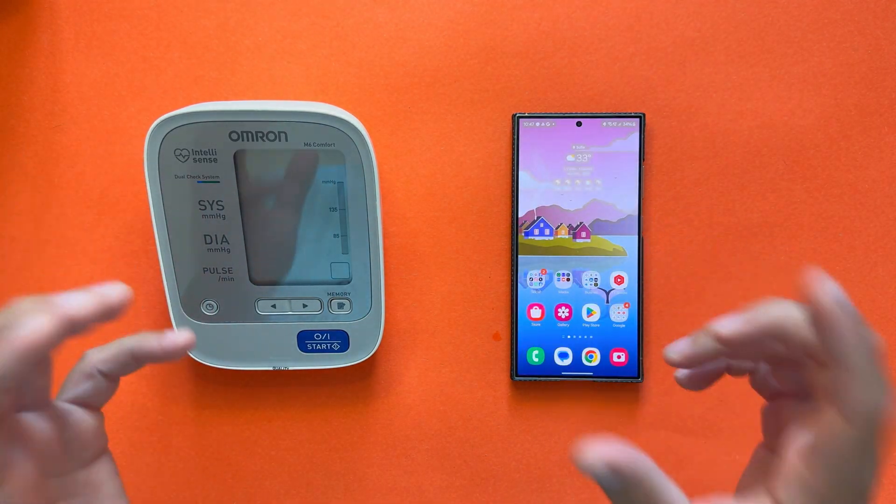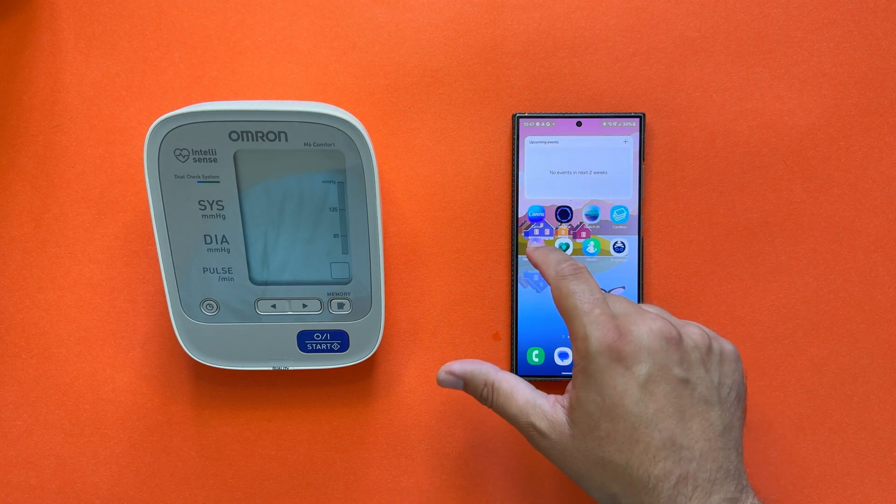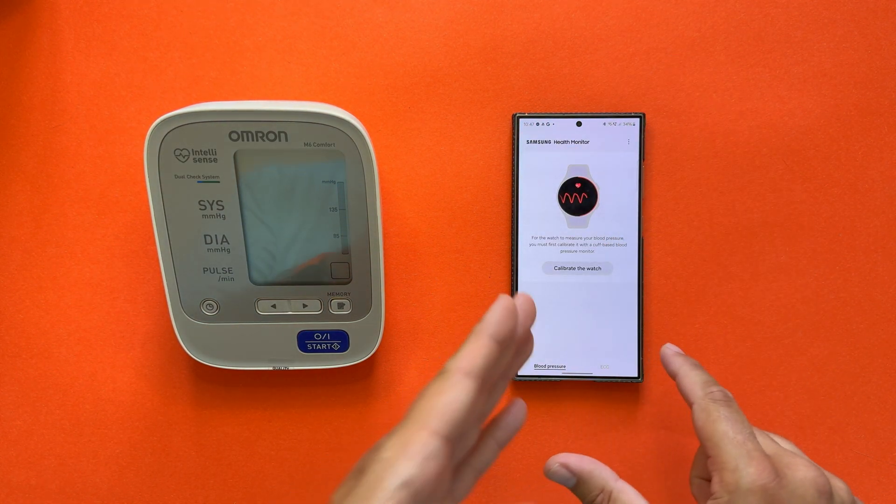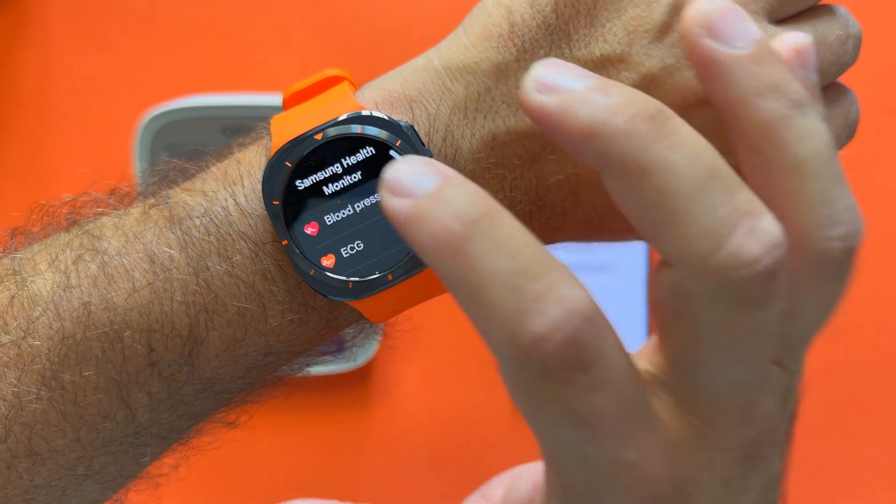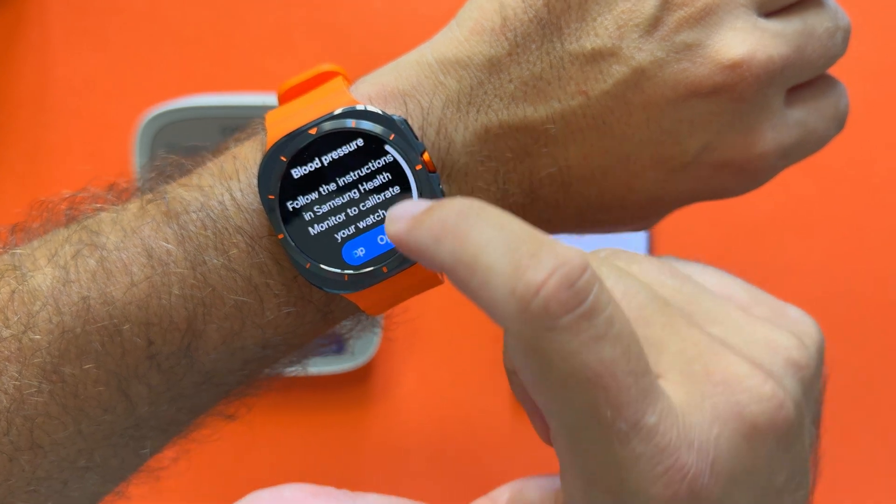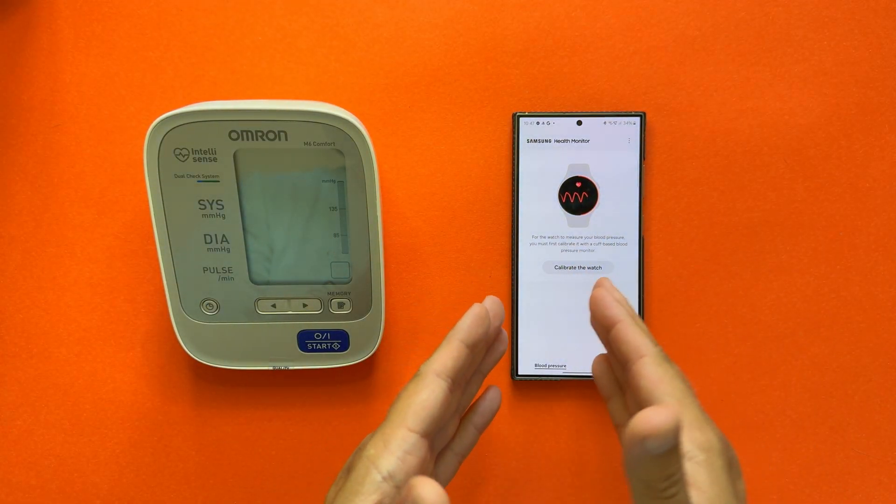But how does that work? First you need to download Samsung Health Monitor. Samsung Health Monitor has two options: one is the blood pressure, the other is the ECG. If I click on the blood pressure, I'm going to get this message: follow the instructions in the Samsung Health Monitor to calibrate the watch. So you need to open that up.